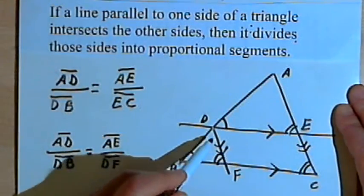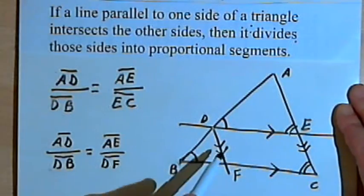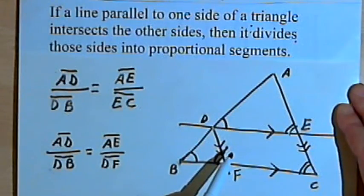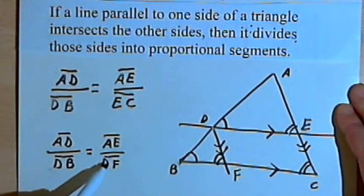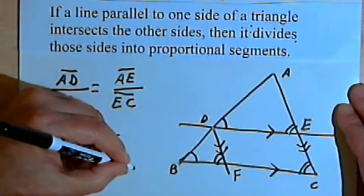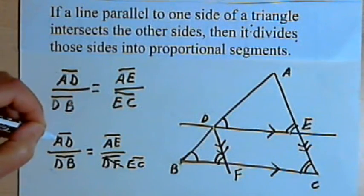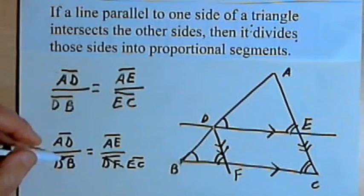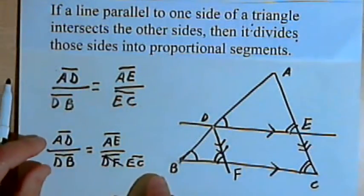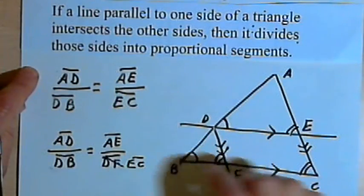Now realize that DF is congruent with EC, because these are opposite sides of a parallelogram. So I can take that proportion I've just written, and instead of using DF I can use EC, since they're congruent. And now what I've got is line segment AD over line segment DB equals line segment AE over line segment EC — the ratios are the same. And that's exactly what I started out with, so that's my proof of this theorem.